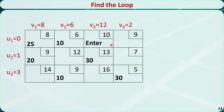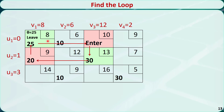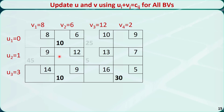Now let's find a loop. The only loop in this basic feasible solution is this one. Starting from the entering variable, we count 0, 1, 2, 3, and 0. We mark odd cells in green and even cells in red. We find the smallest value among all the odd cells, which is 25. We give this value to theta — this will be the leaving variable. We decrease odd cells by theta and increase even cells by theta. This is the new basic feasible solution after the loop pivoting.